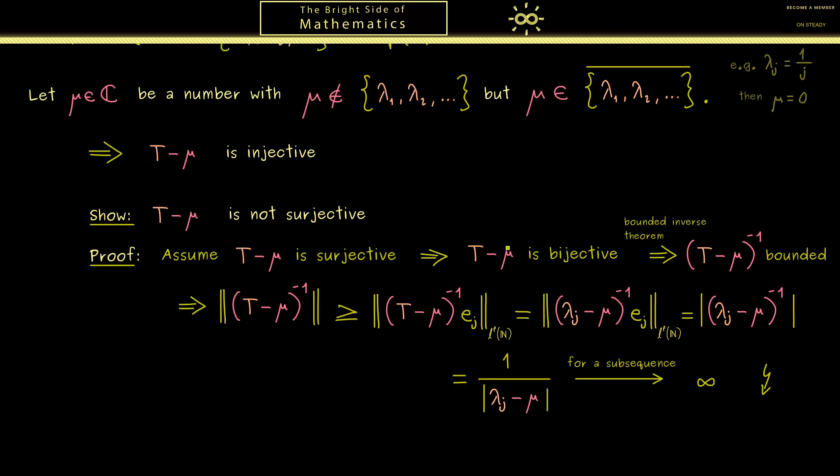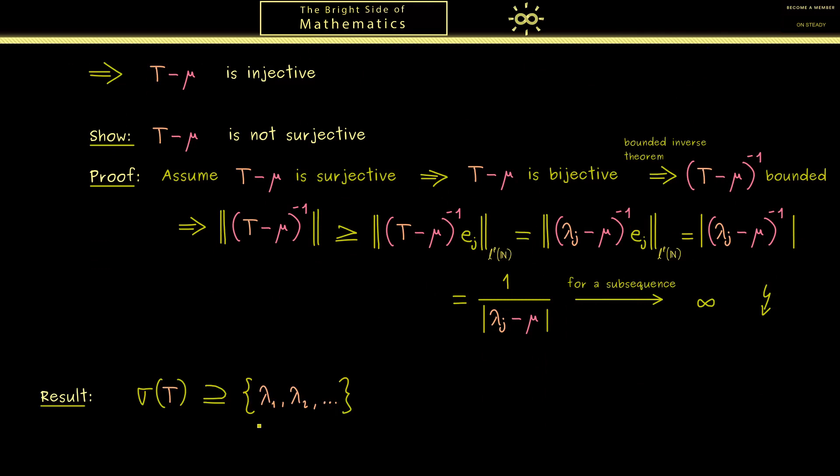Let's summarize what we have found. The spectrum of T contains our lambda values and also the accumulation points mu. Now it's not hard to show that these are indeed the only possibilities for the spectrum. So this is what the spectrum of the operator T looks like. The first part is the point spectrum of T, the eigenvalues.